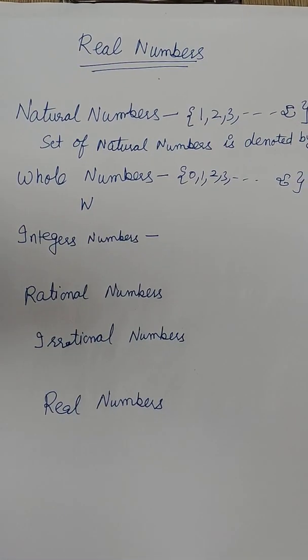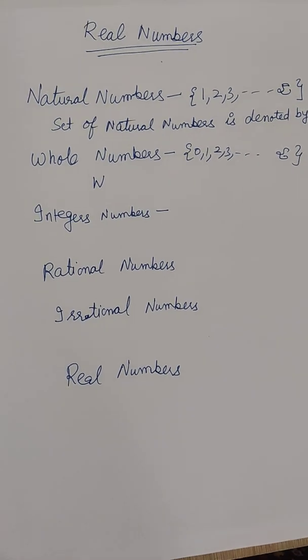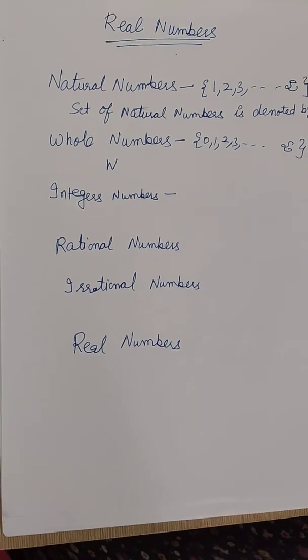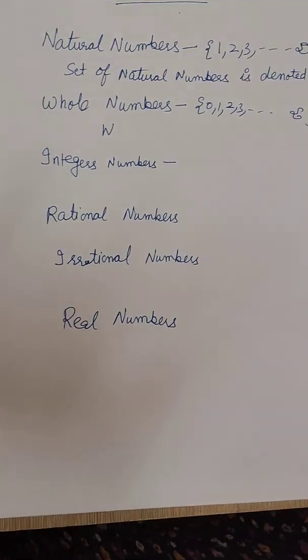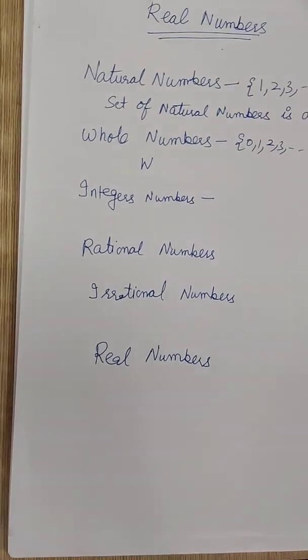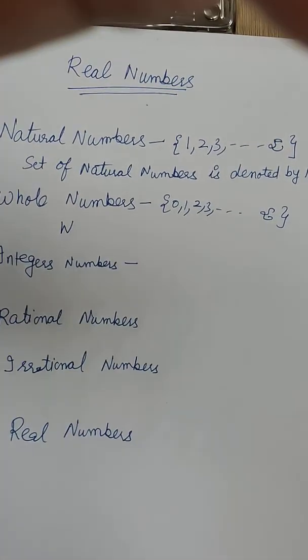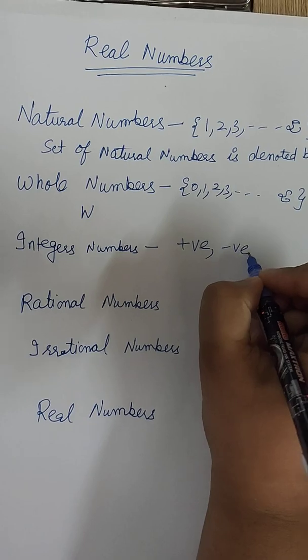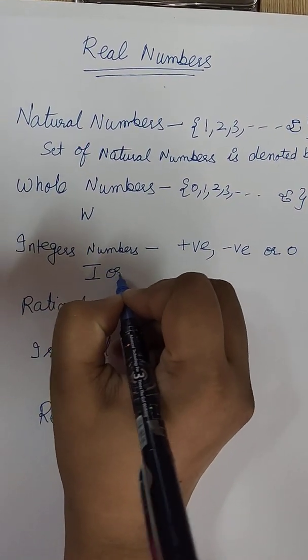Next is integers. Sometimes we have to define anything in the negative form. Like if I say that the temperature below the sea, we can't say it is positive because it is going down side. So when any temperature goes down side, it means that we have to represent with the negative one. So that's why integers are required. So what are the set integers? It is the collection of positive, negative or 0.